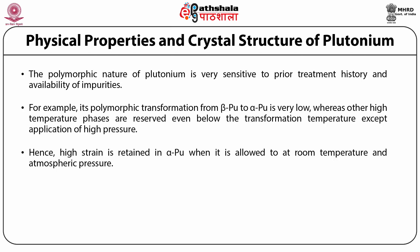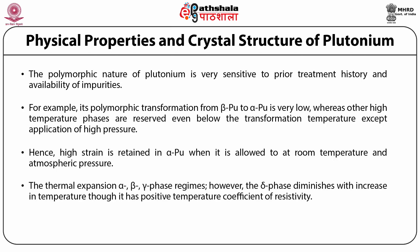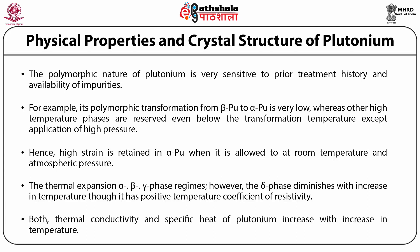As shown in the figure, the thermal expansion of alpha, beta, and gamma phase regimes is positive. However, the delta phase diminishes with increase in temperature though it has a positive temperature coefficient of resistivity. The delta prime phase reveals irregular thermal expansion behavior. Plutonium has the highest value of electrical resistivity among all metals, much like semiconductors. Both thermal conductivity and specific heat of plutonium increase with increase in temperature. Furthermore, it has the lowest temperature specific heat of any pure element.